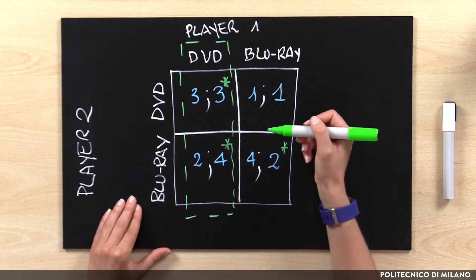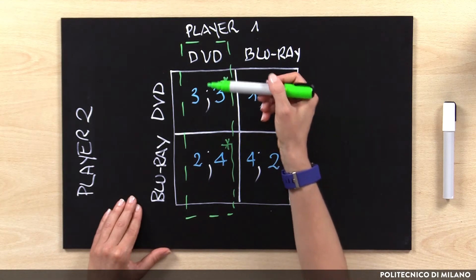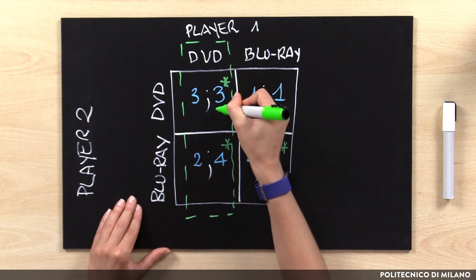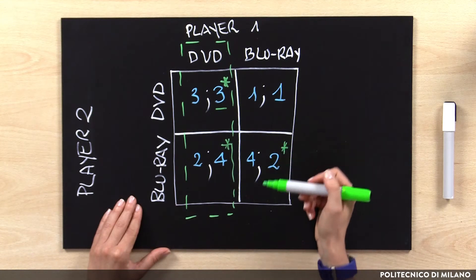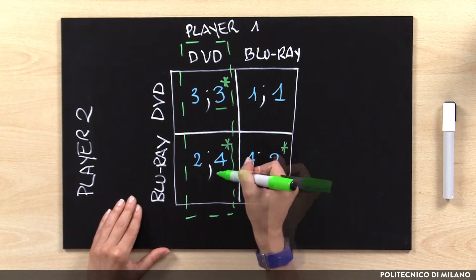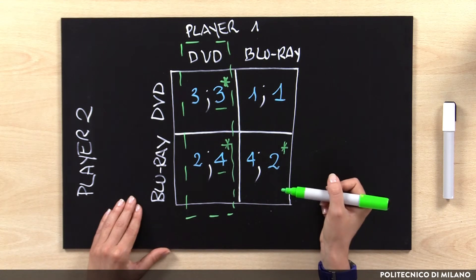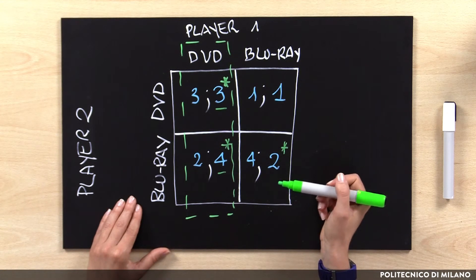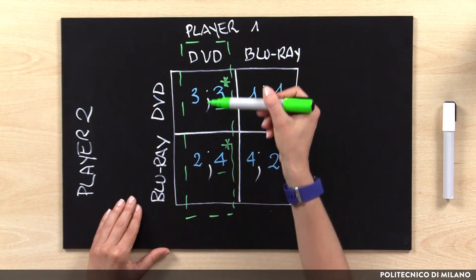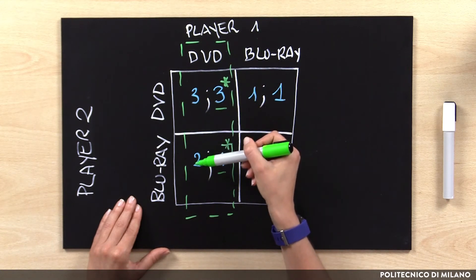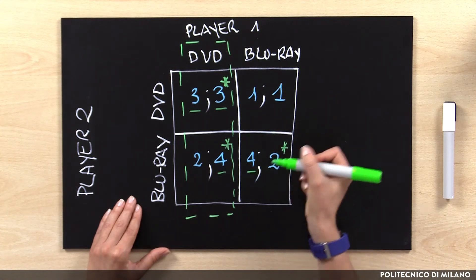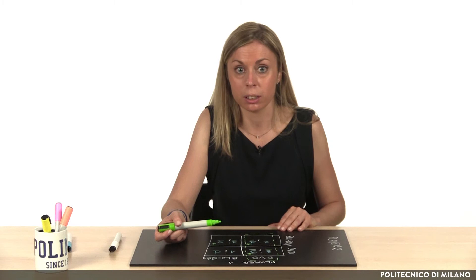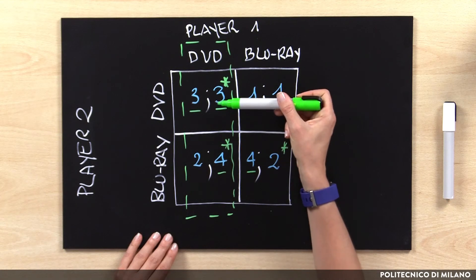Considering our example, for Player 1: if Player 2 selects DVD, it is better to choose DVD with a payoff of 3 rather than 1; if Player 2 selects Blu-ray, it is better to choose DVD with a payoff of 4 rather than 2. For Player 2: if Player 1 selects DVD, it is better to choose DVD with a payoff of 3 rather than 2; if Player 1 selects Blu-ray, it is better to choose DVD with a payoff of 4 rather than 1. We could notice that the equilibrium point is DVD for both actors.